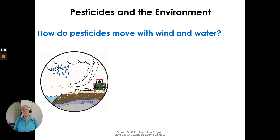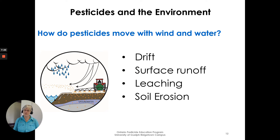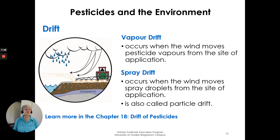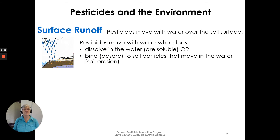How do pesticides move with wind and water? We have drift — we talked about vapor drift. Surface runoff, leaching, and soil erosion. Vapor drift occurs when the wind moves pesticide vapors from the site of application. Spray drift, also called particle drift, occurs when the wind moves spray droplets from the site of application. That will be discussed further in Chapter 18. Surface runoff: pesticides move with water over the surface when they dissolve in water or bind and adsorb to soil particles that move through soil erosion.